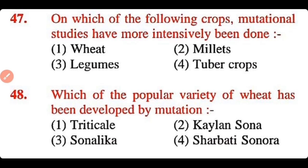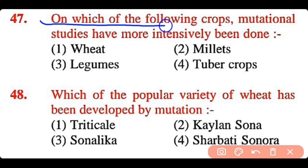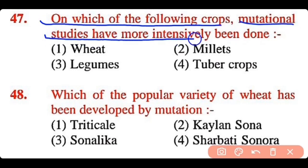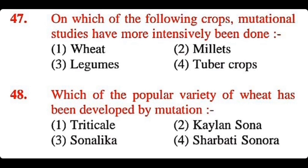Question 47: On which of the following crops have mutational studies been more intensively done? Wheat, millets, legumes, or tuber crops. The correct answer is option 1. Mutational studies are mostly done on wheat crops.